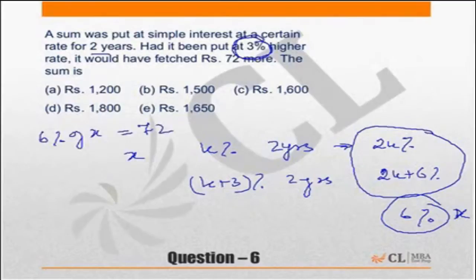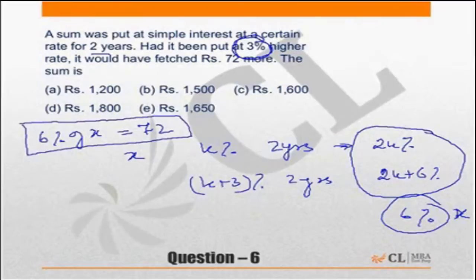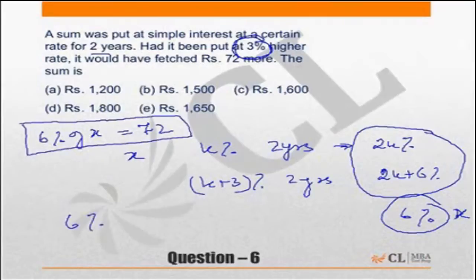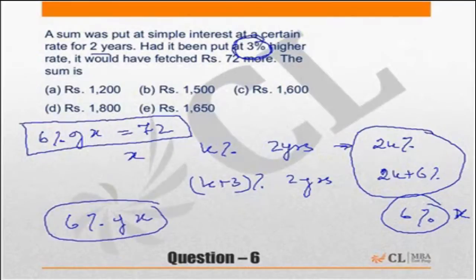Such questions are best solved by keeping the incremental change in mind. When the interest rate increases by 3 percent, every year you get 3 percent extra, so in 2 years you get 6 percent extra. 6 percent of the principal is the extra amount you have got. As per the question, you have got 72 more, so 6 percent of the principal equals 72. Therefore X equals 72 divided by 6, multiplied by 100.